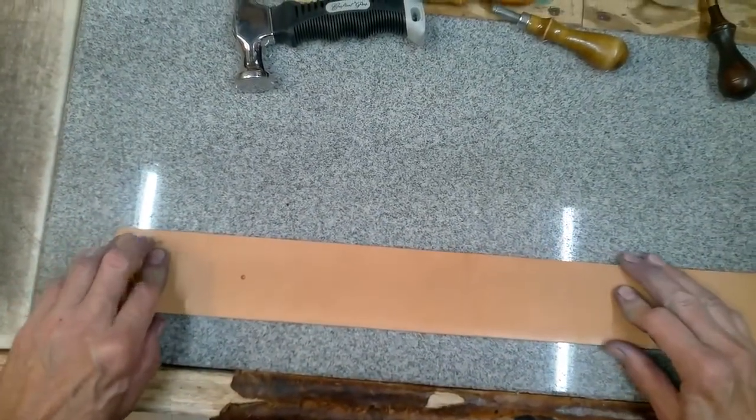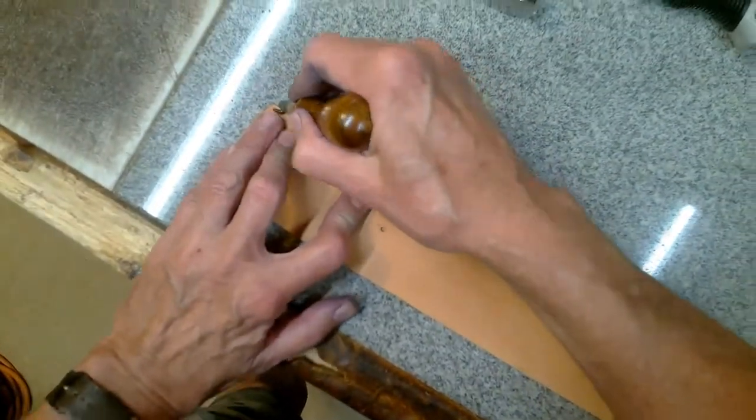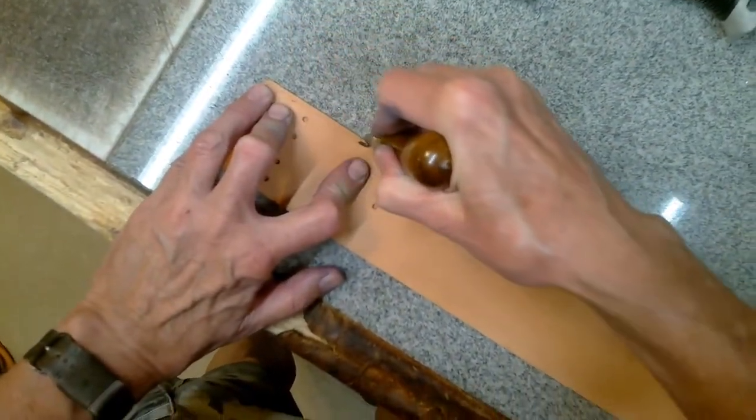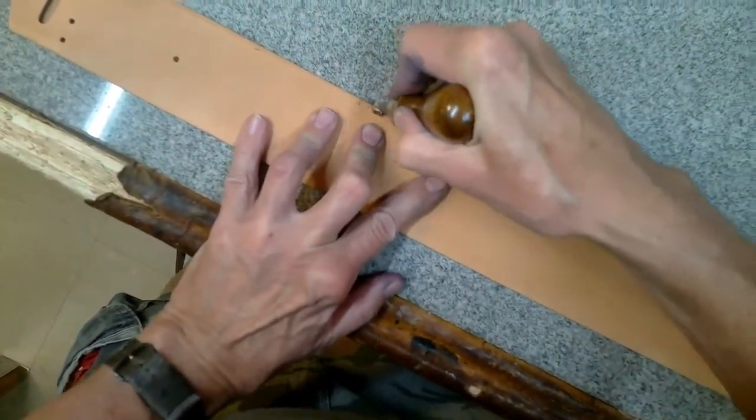Making sure to keep the edges of the belt aligned, run a stitching groover about an eighth inch in from the edge. Groove the edge of the belt to be sewn and the billet end of the money belt.